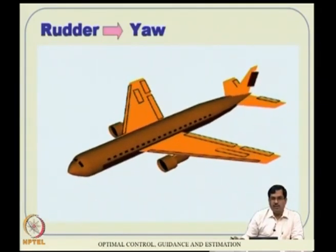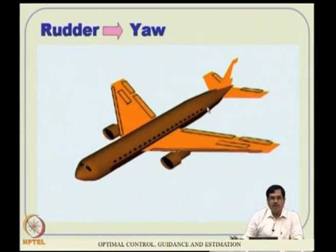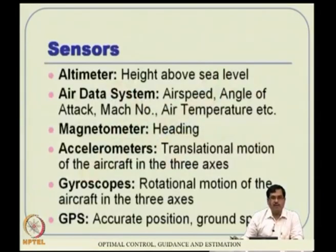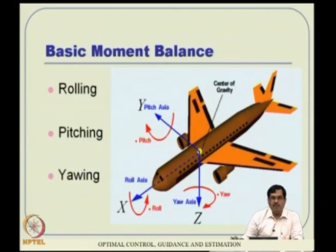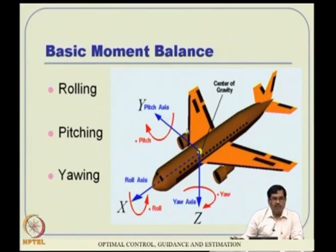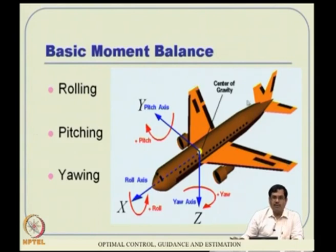These motions — roll, pitch, yaw — are actually coupled. Rolling is about the positive x-axis, pitching is about the positive y-axis, and yawing is about the positive z-axis. For controlling roll there are ailerons, for pitch there are elevators, and for yaw there is the rudder. There are additional surfaces like flaps, spoilers, and slots, which are typically used during takeoff and landing.